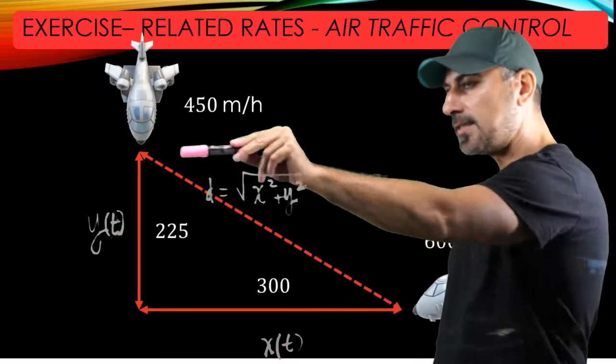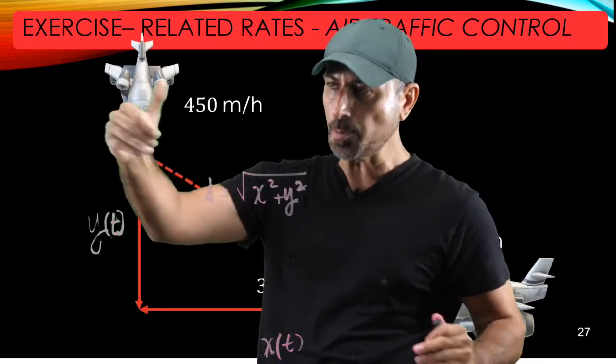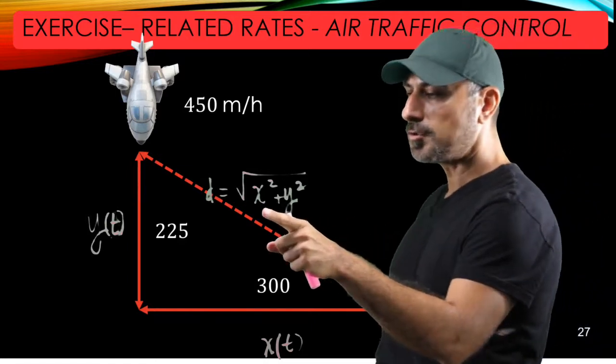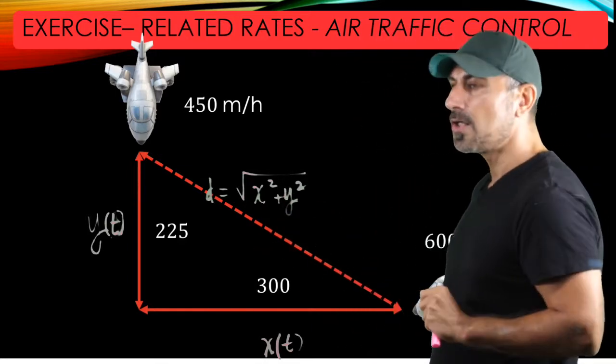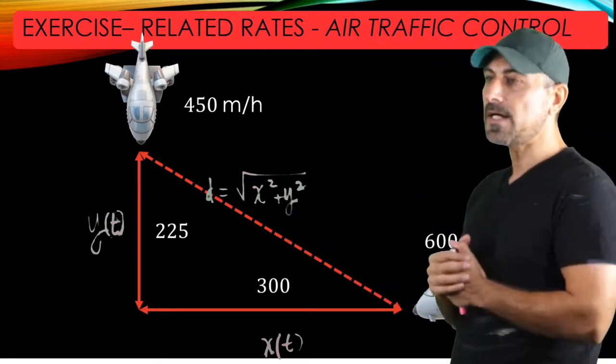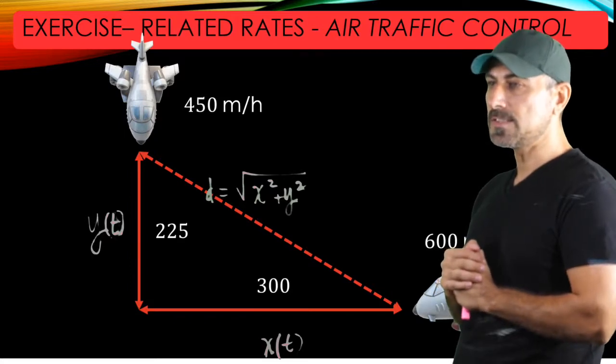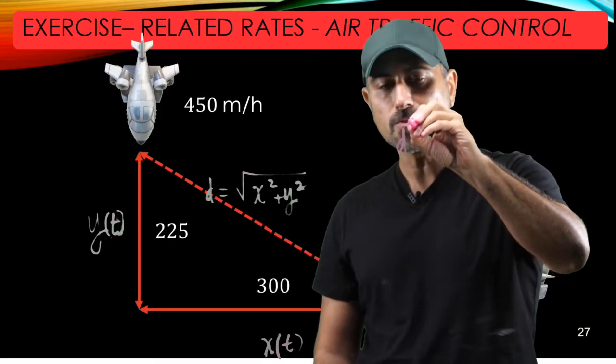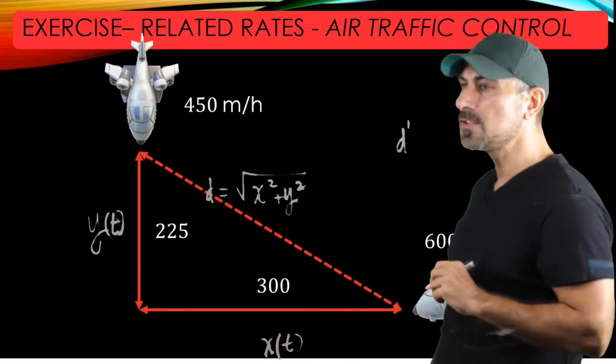Y is decreasing, X is decreasing, and the distance between these two planes is decreasing, but the distance is given in terms of X and Y. Since the question is asking how fast the distance is decreasing between these two planes, we are in fact asked to find the rate of change of D distance with respect to time.